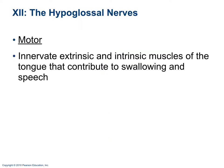Cranial nerve 12 is the hypoglossal nerve — motor. It innervates the extrinsic and intrinsic muscles of the tongue. The extrinsic muscles move the tongue globally, and the intrinsic muscles change the shape of the tongue, contributing to both speech and swallowing.